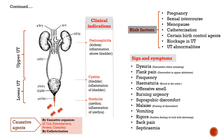Talking about risk factors, these include pregnant women, sexual intercourse, menopause period, post-catheterization, and certain birth control agents. Additionally, if a person has a urinary tract abnormality or blockage, they will also be very prone to urinary tract infections.